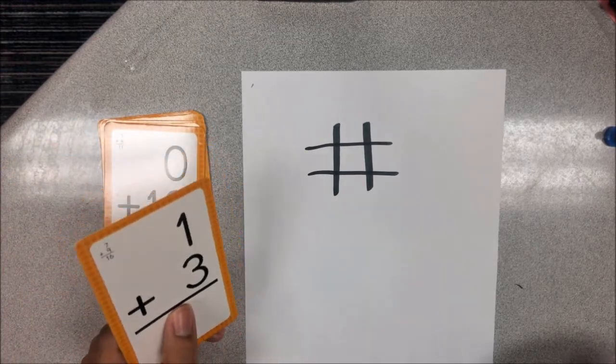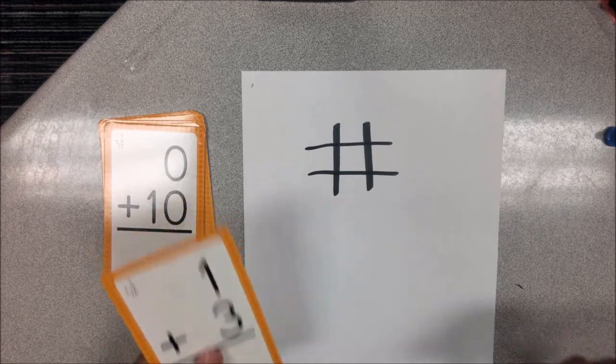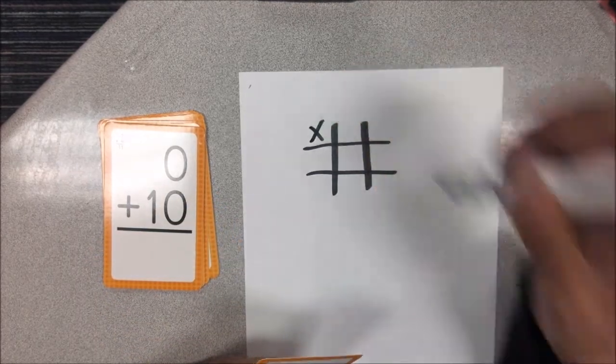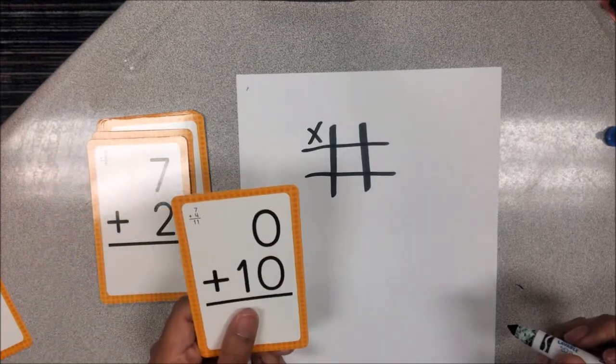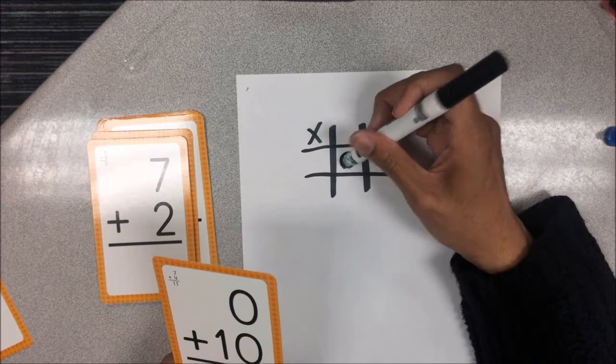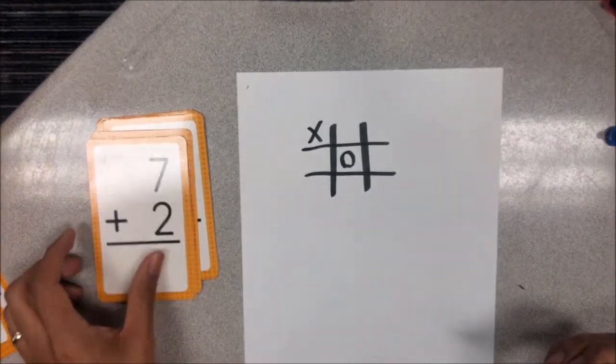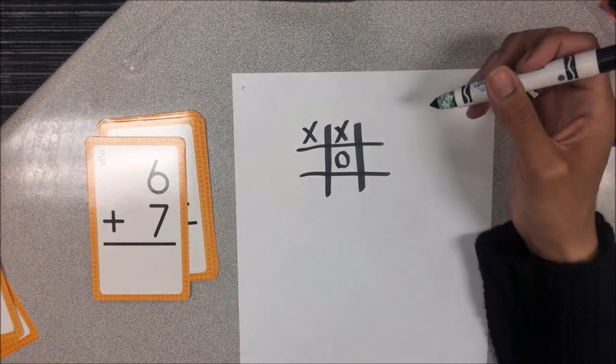If they answer it correctly they get to make a move on the Tic-Tac-Toe grid. So this is four, I get to make my move. The next person goes. They say the answer to this is 10. So they make their move. The next person makes their move. And it's just like regular Tic-Tac-Toe.